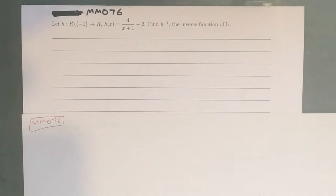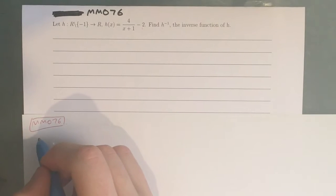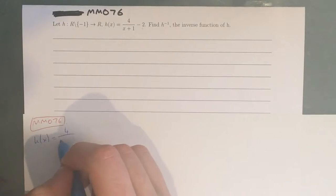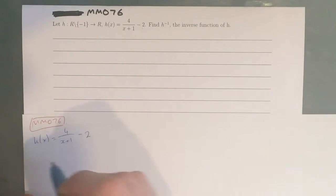So, where do we start? As always, we need to first state the equation. So h of x equals 4 on x plus 1, take 2. I like to say let y equal 4 over x plus 1, take 2, just so that we're not pulling a y out of nowhere.